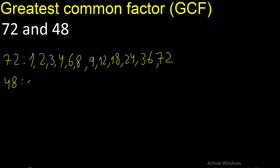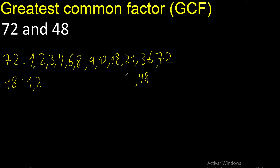Factors. Here. Always start with 1. 48 divided by 1 is 48. Next, divided by 2 is 24. Next, 4. Divided by 3 is 16.